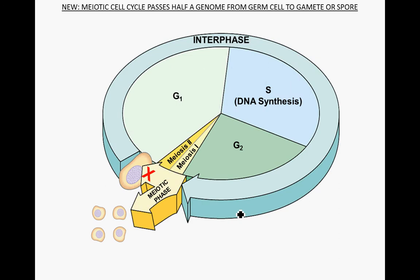The meiotic cell cycle passes half a genome from germ cell to gamete or spore. The cells that undergo meiosis are sometimes referred to as germ cells — germ meaning new growth, new generation. You get either a gamete or a spore: in plants and fungi the product is spores, and in animals you get gametes.